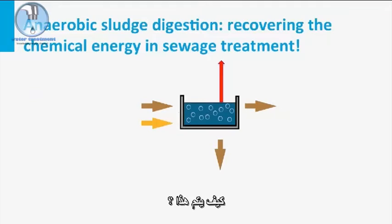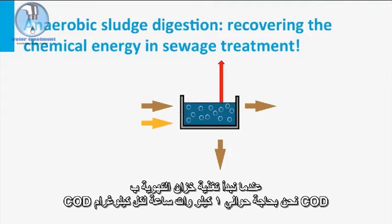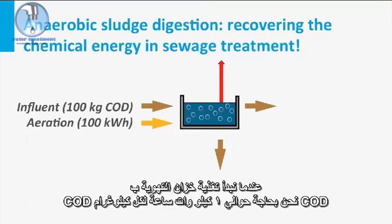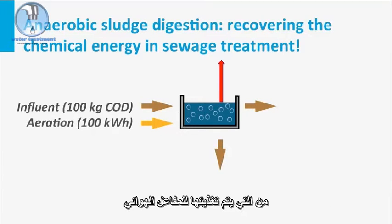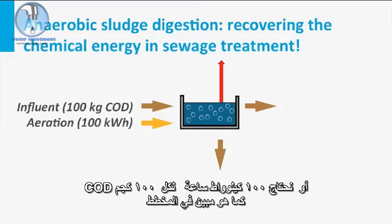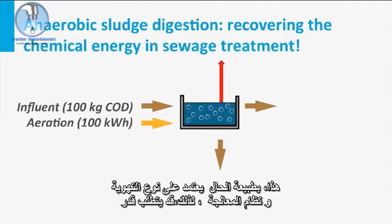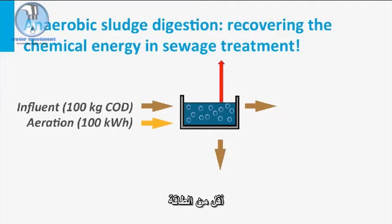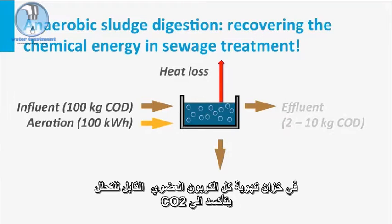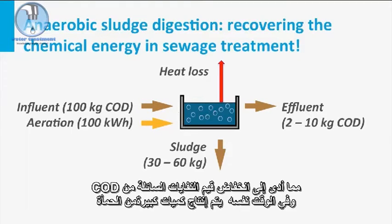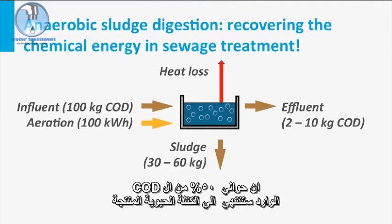How does this work? When we feed the aeration tank with COD, we need about 1 kWh per kg COD fed to the aerobic reactor — for 100 kg COD we need 100 kWh, as depicted in this scheme. This depends on the type of aeration system and treatment process, so less energy may be required. In the aeration tank, all biodegradable organic carbon is oxidized to CO2, resulting in low effluent COD values. Meanwhile, a high amount of sludge mass is produced — about 50% of the incoming COD will end up in the biomass produced.